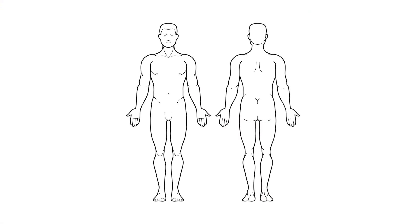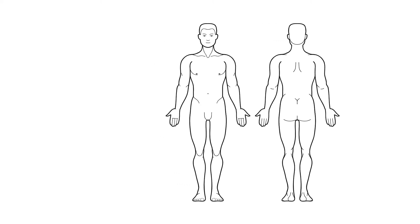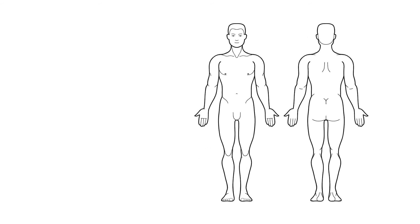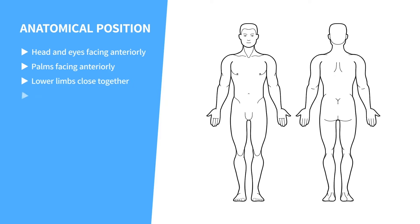The anatomical position refers to the body in a standing position, and a picture is worth a thousand words — this rings true here. The head and eyes are directed forward, which is called anteriorly, and the upper limbs are adjacent to the sides with the palms facing anteriorly as well. The lower limbs are close together with the feet parallel and the toes pointed anteriorly.